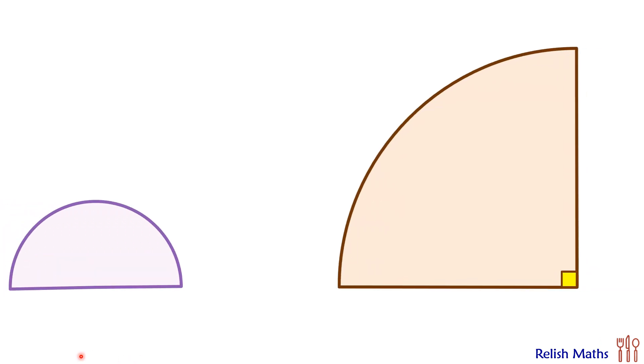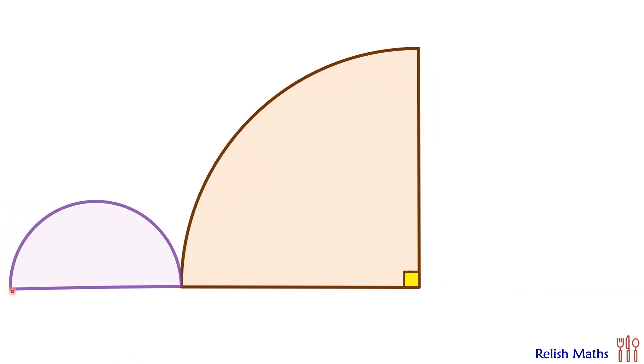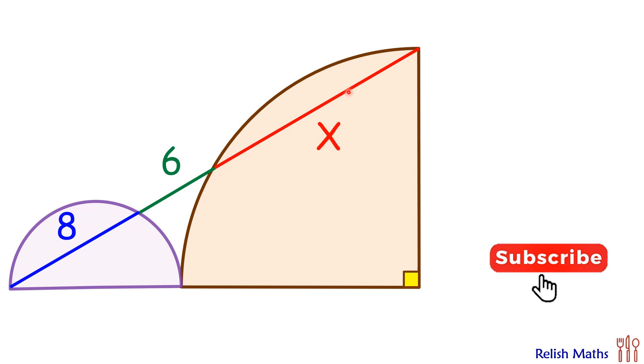In this interesting question, given are a semicircle and a quadrant. A line segment is drawn with lengths of 8 centimeters, 6 centimeters, and x centimeters. Using this data, we have to find the value of x.